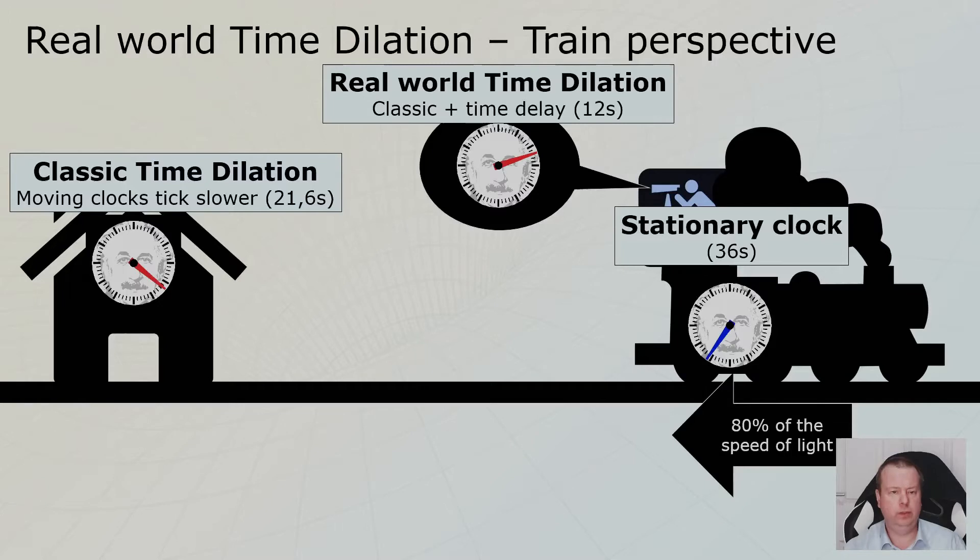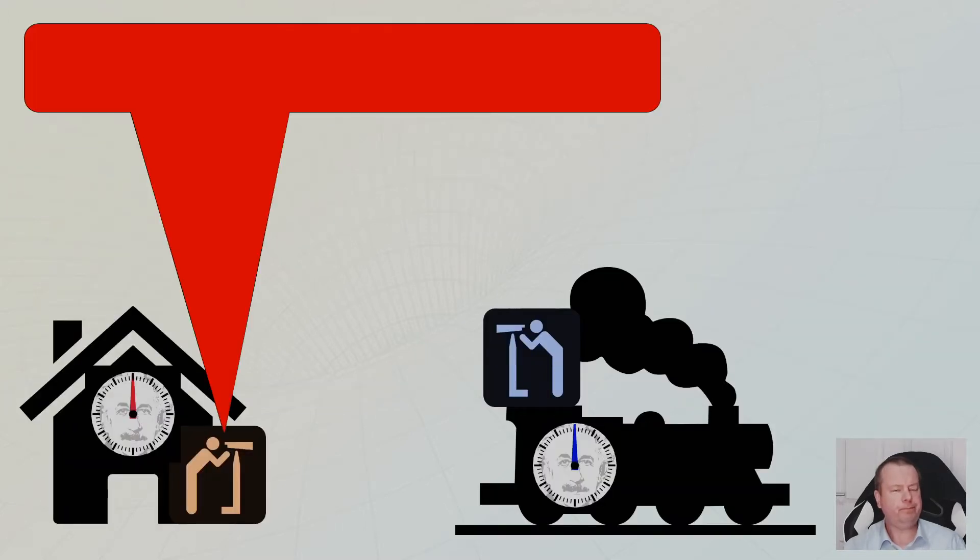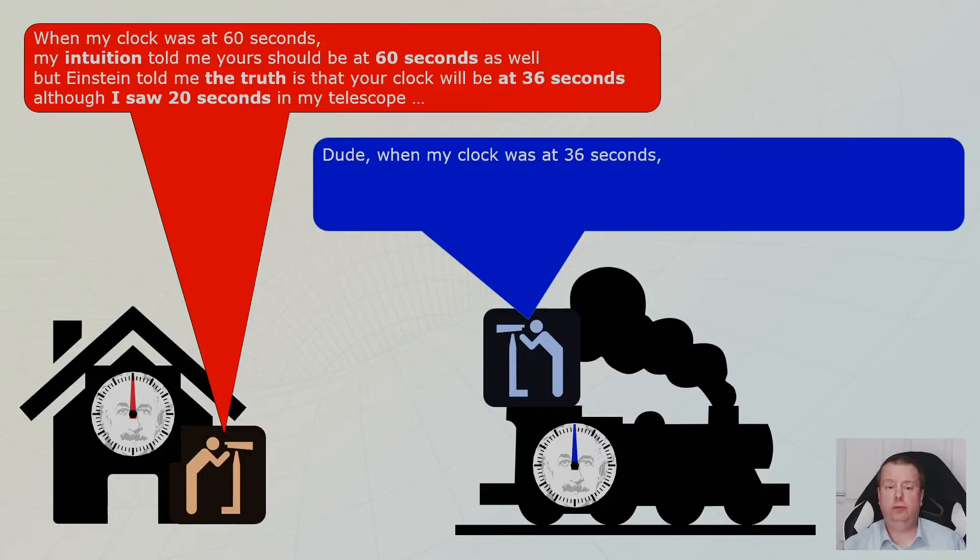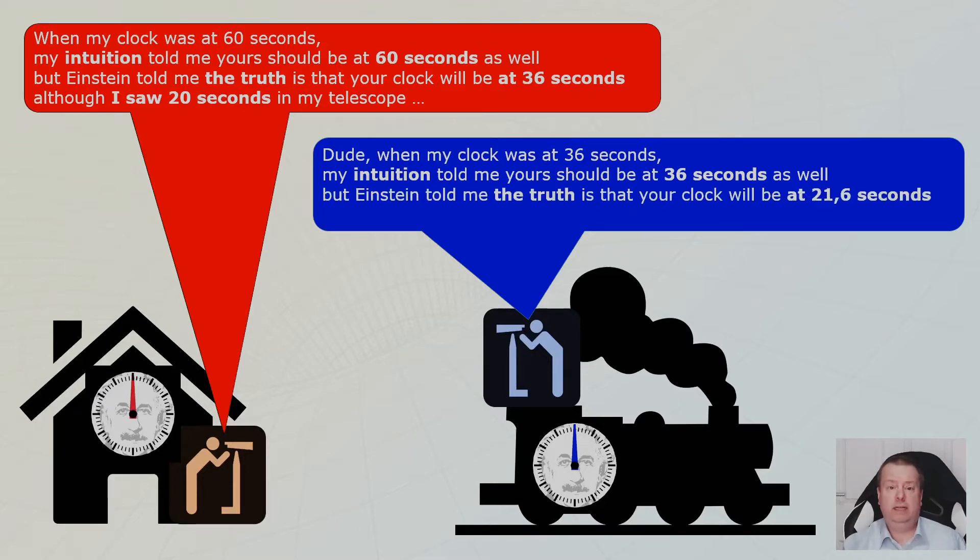And this was really confusing. And we talked about this in the previous level. And we got this conversation. The observer to the left says, when my clock is at 60, my intuition tells me that your clock should be at 60 as well. Einstein tells me it will be at 36. So I decided to pick up a telescope and I saw 20. And then the other observer says, when my clock was at 36, I thought yours would be at 36 as well. But Einstein tells me it is 21.6. But I saw 12.